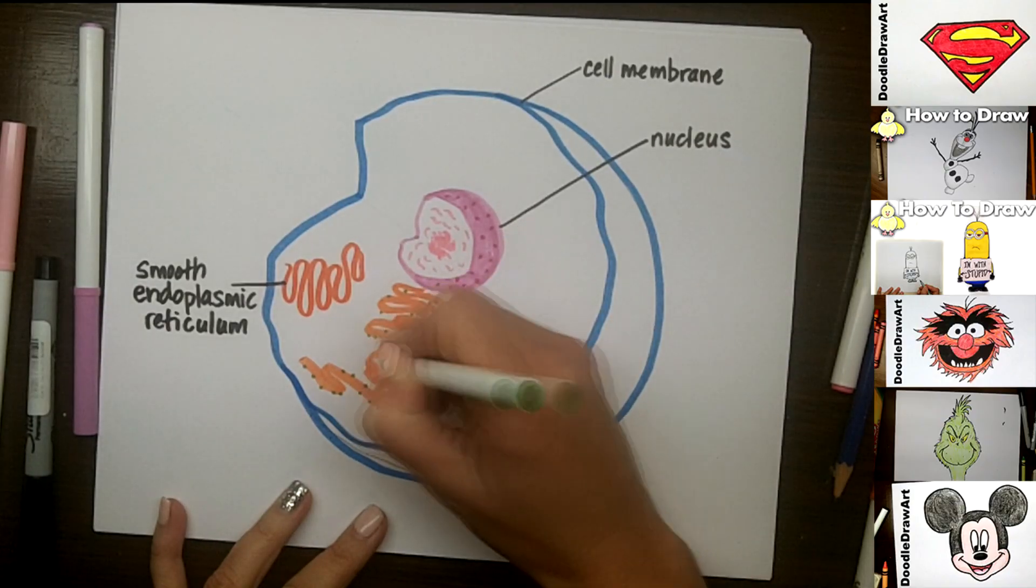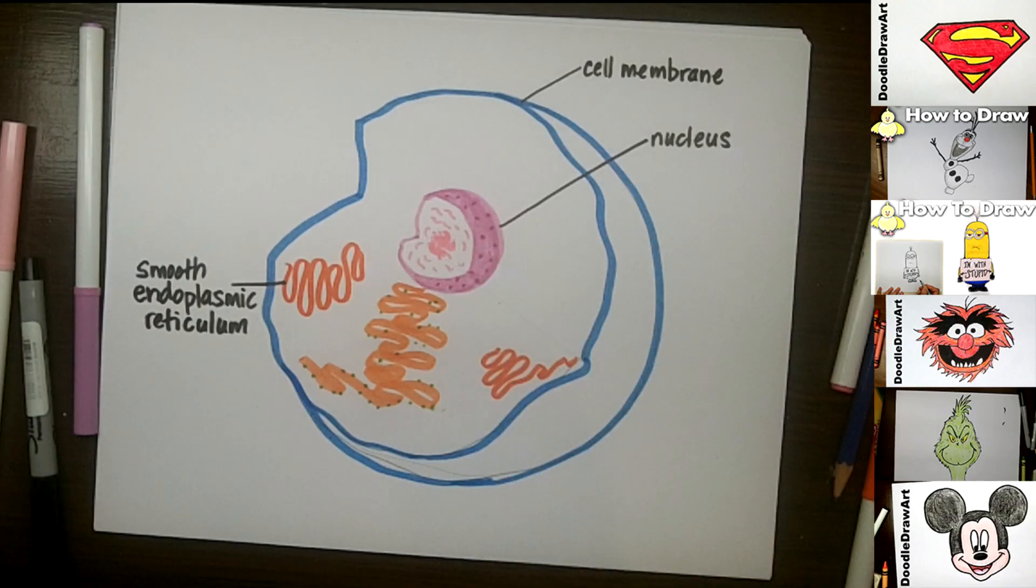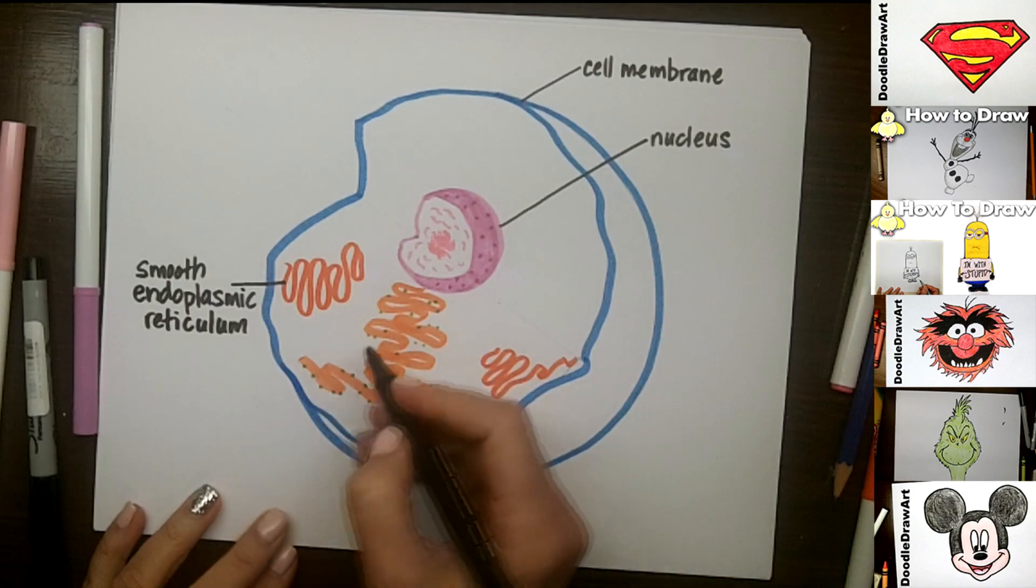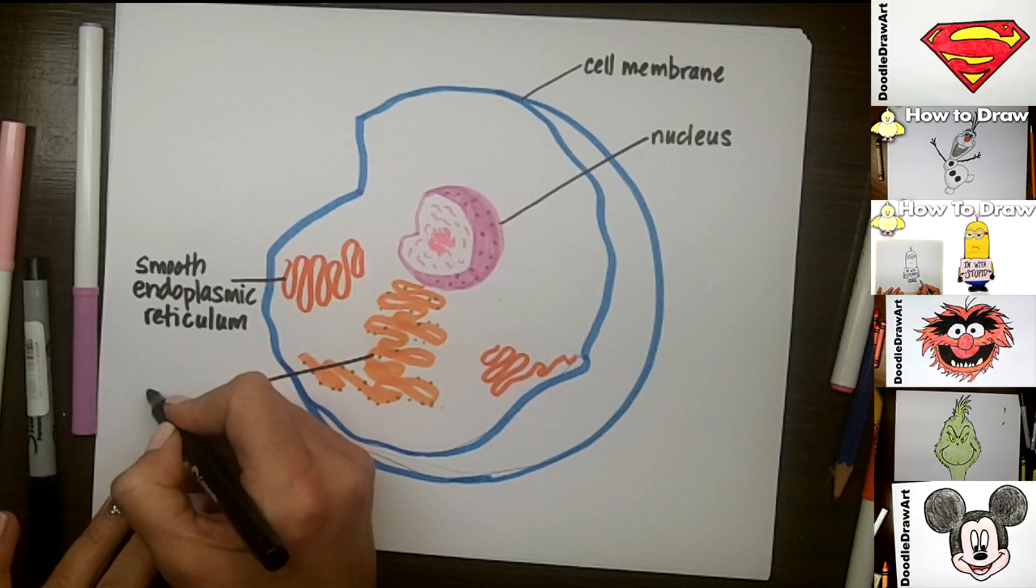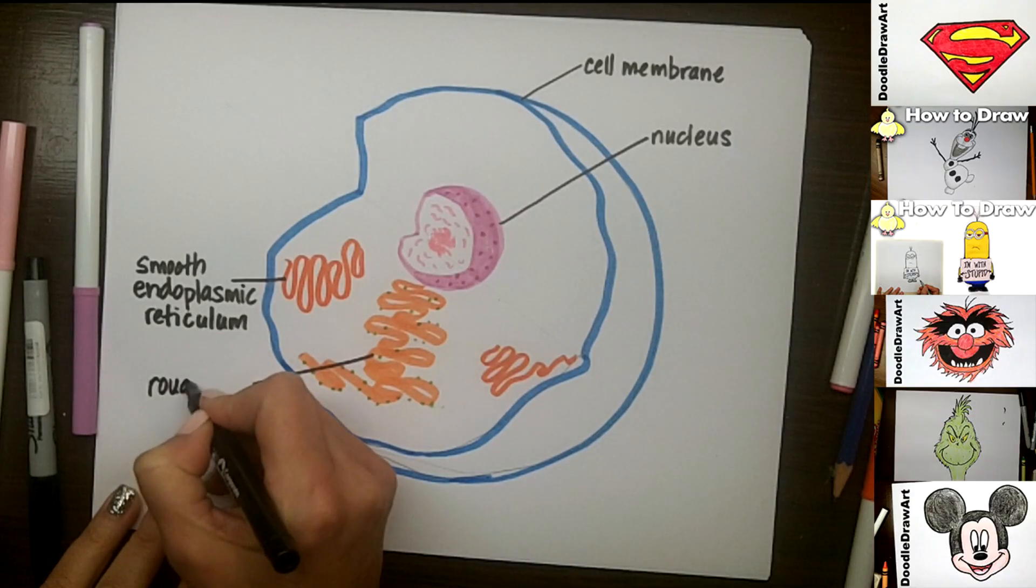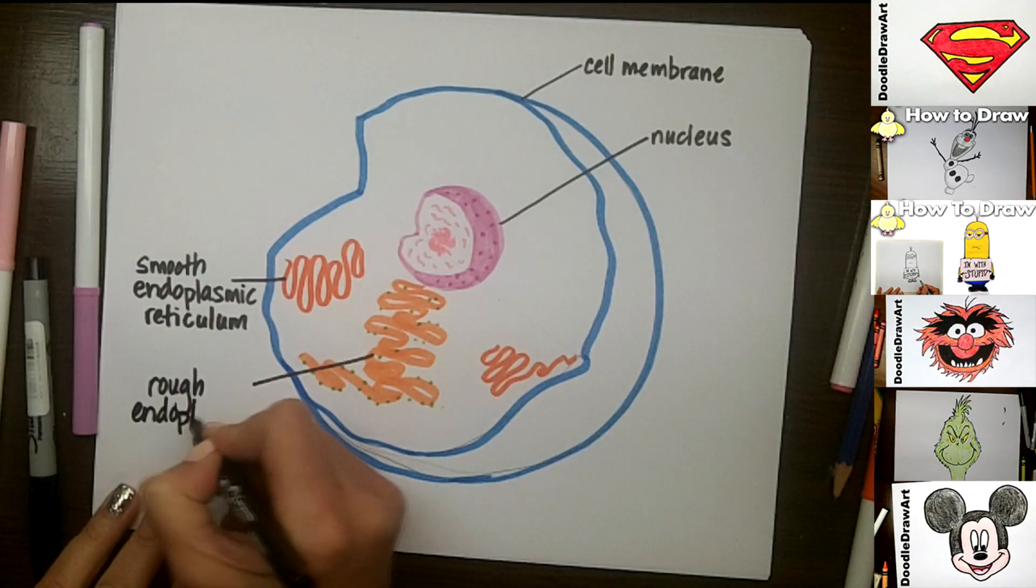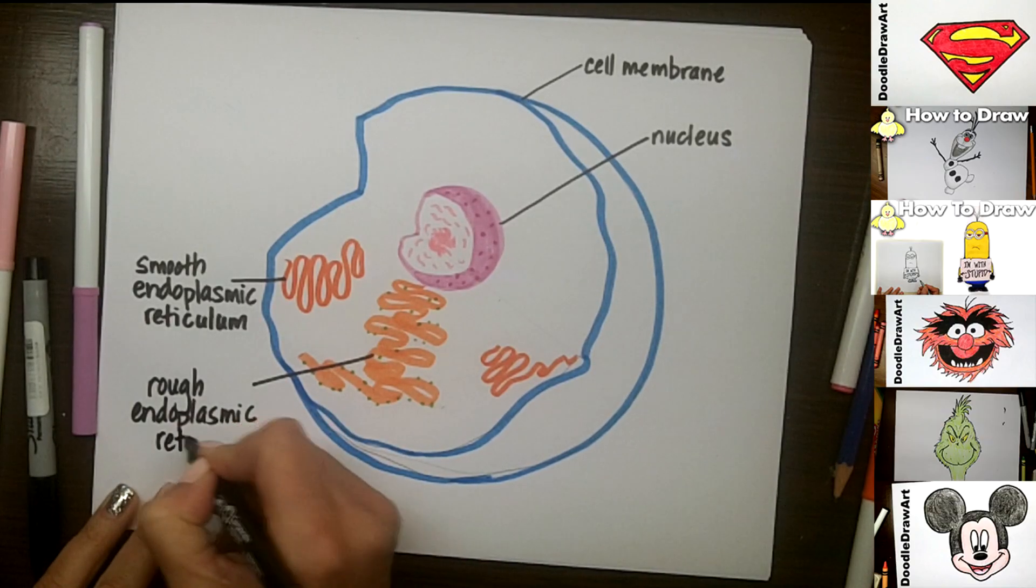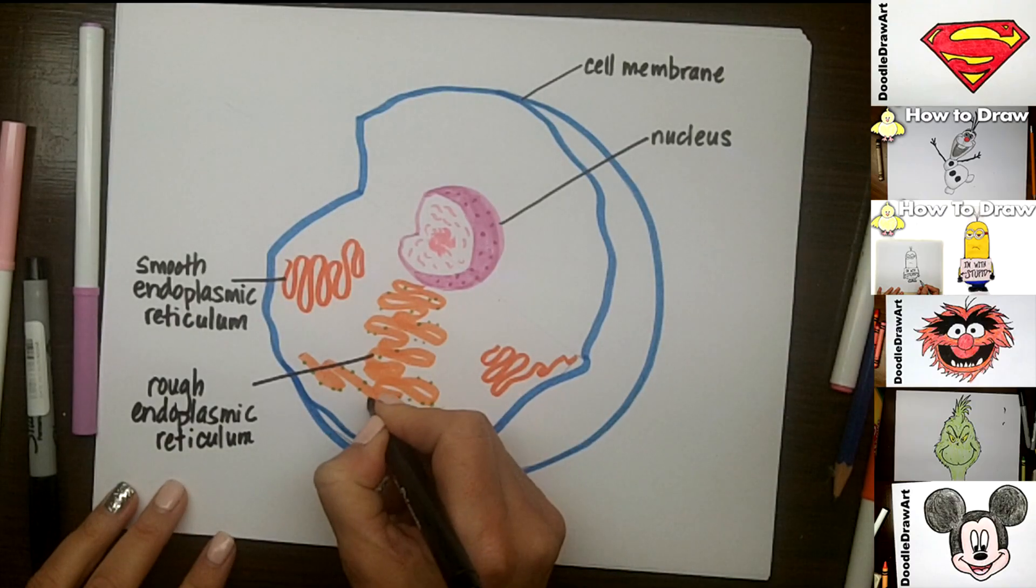So within the cell, we could have multiple. The only thing that's only got one is the nucleus. So you can draw more than one of these if you want to. So now I'm going to label this. I'm going to draw a line like here. And I'm going to label rough endoplasmic reticulum.